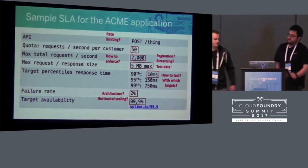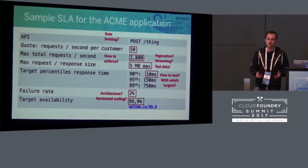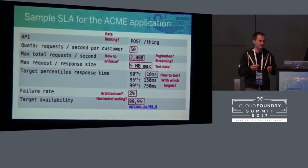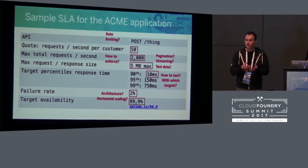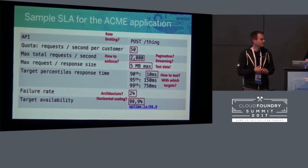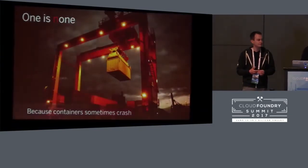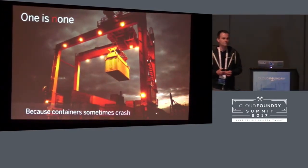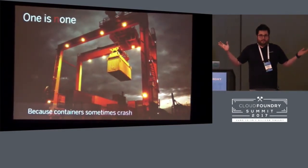When you look at topics like failure rate and target availability, you start asking yourself: if I want a target availability and max failure rate, is my monolithic application still enough? And since we're talking about target availability — how many of you have deployed applications on Cloud Foundry with just one instance? We all have, right? It's the monolith, the one true monolith.